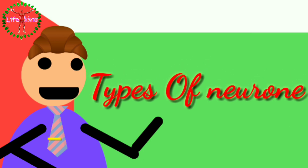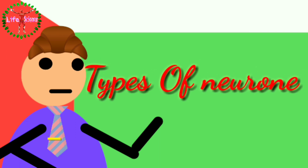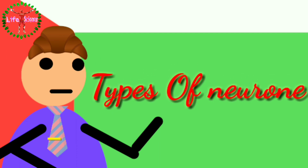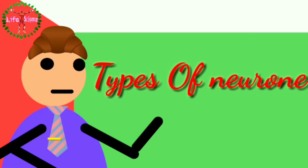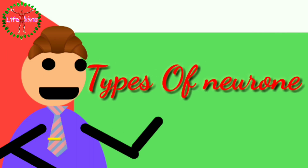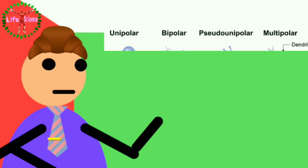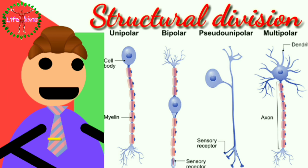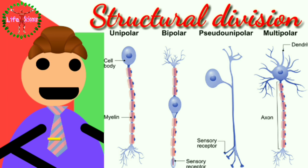Types of Neuron. Neurons are divided into two groups on the basis of two features: structural and functional. The structural division — according to the position of the cell body — divides them into four types: unipolar, bipolar, pseudo-unipolar, and multipolar.